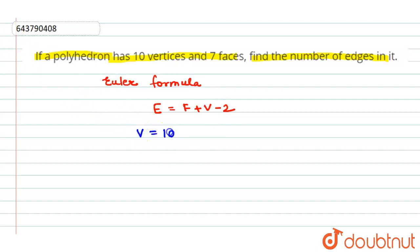And faces is equal to 7. So now edge equal to faces plus vertices minus 2.